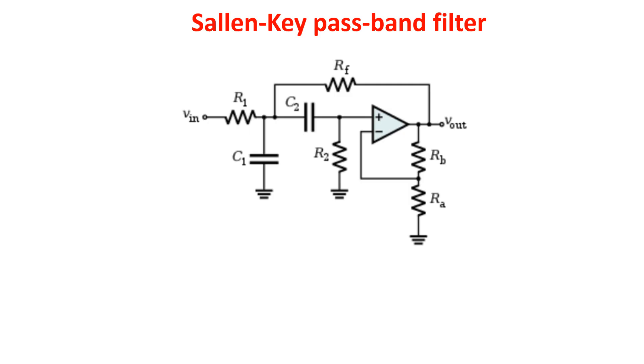Summing up, the Sallen-Key topology is a second order active filter with just an op-amp and can be used to create various kinds of frequency response, for example Butterworth and Chebyshev, and any kind of filter, passband, low-pass and high-pass. This kind of filter is widespread due to its simplicity and its ability to adapt to different circuit needs.